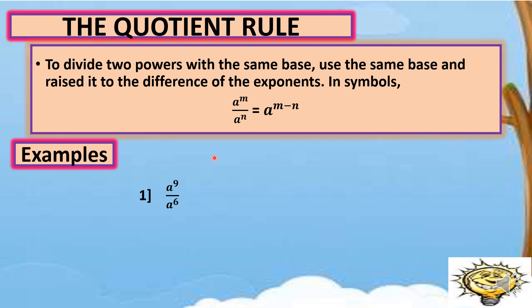Number one, a raised to 9 divided by a raised to 6. They have the same base, which is a. So we copy letter a, then subtract their exponents: 9 minus 6. The difference of 9 and 6 is 3. So our final answer is a raised to 3.